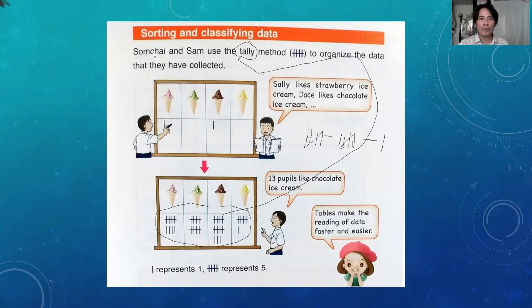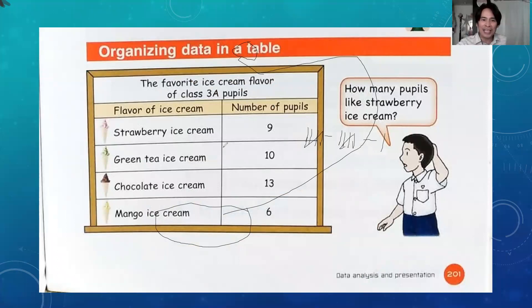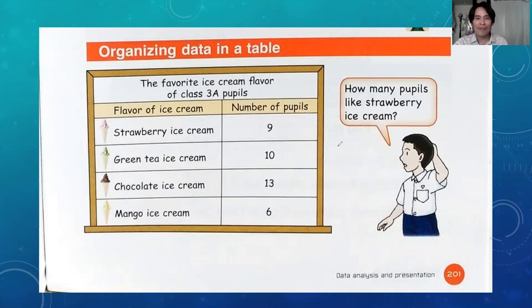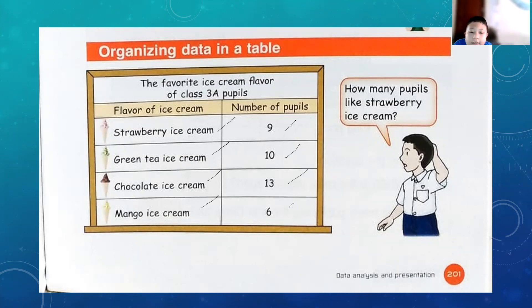Next, we have to organize our data by making a table. A table in mathematics is not the table we eat on — it's a list of information written in rows and columns. The ice cream flavors are: strawberry, green tea, chocolate, and mango ice cream. The number of pupils for each flavor: nine, ten, thirteen, and six.